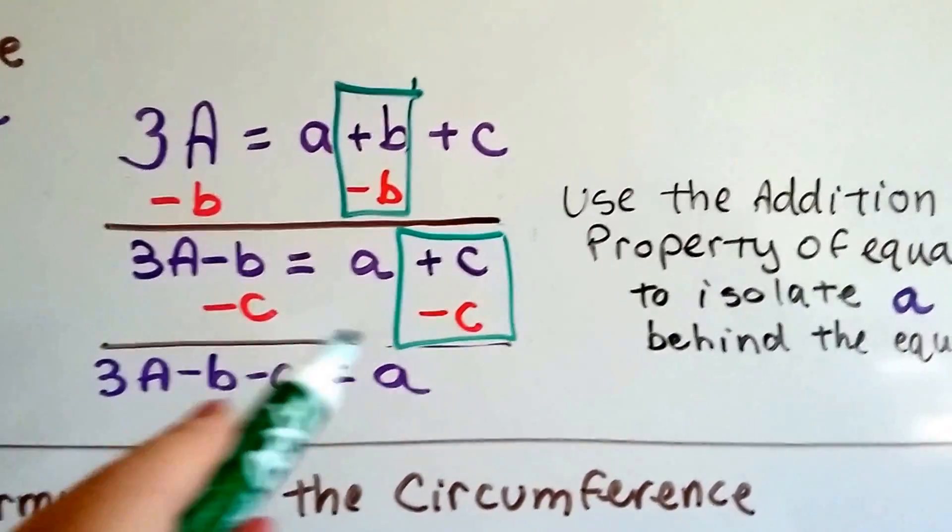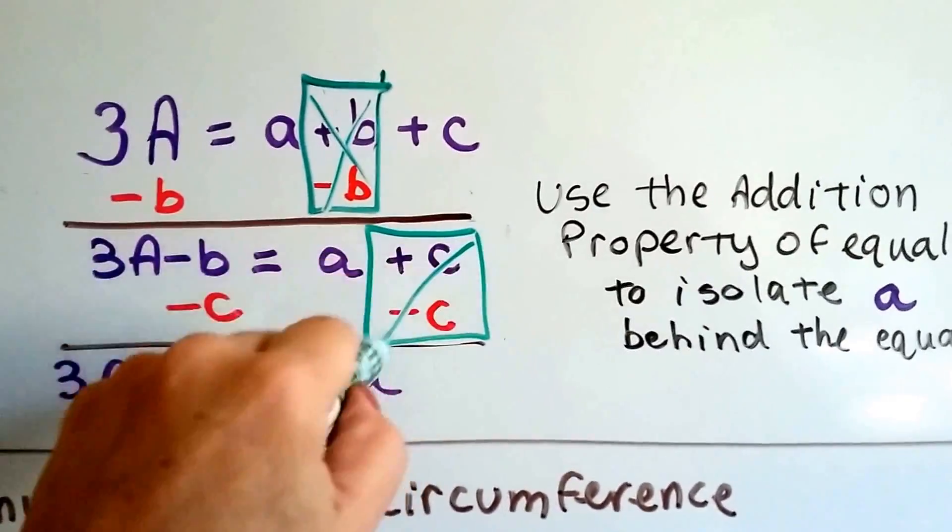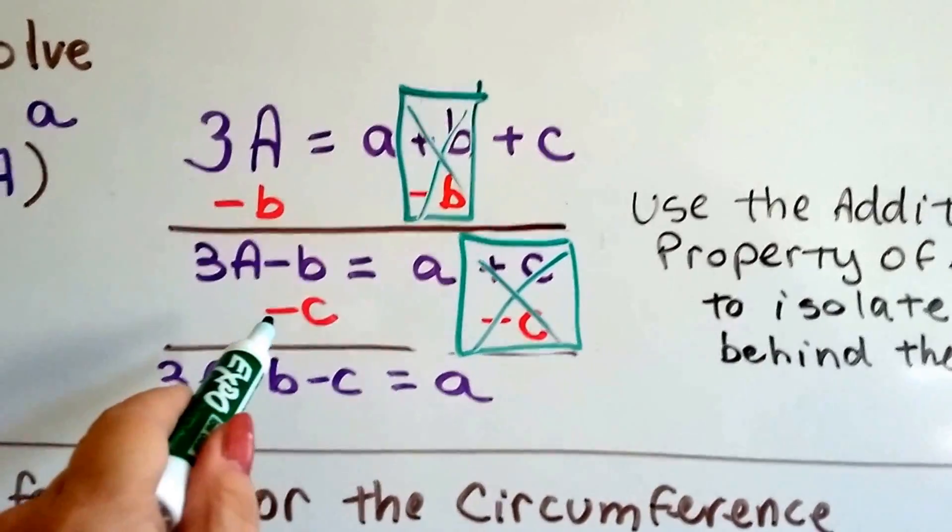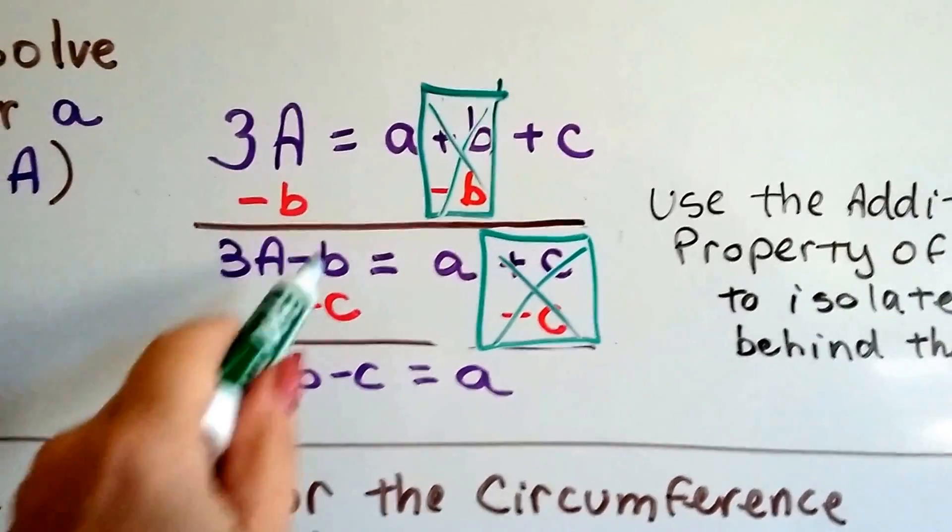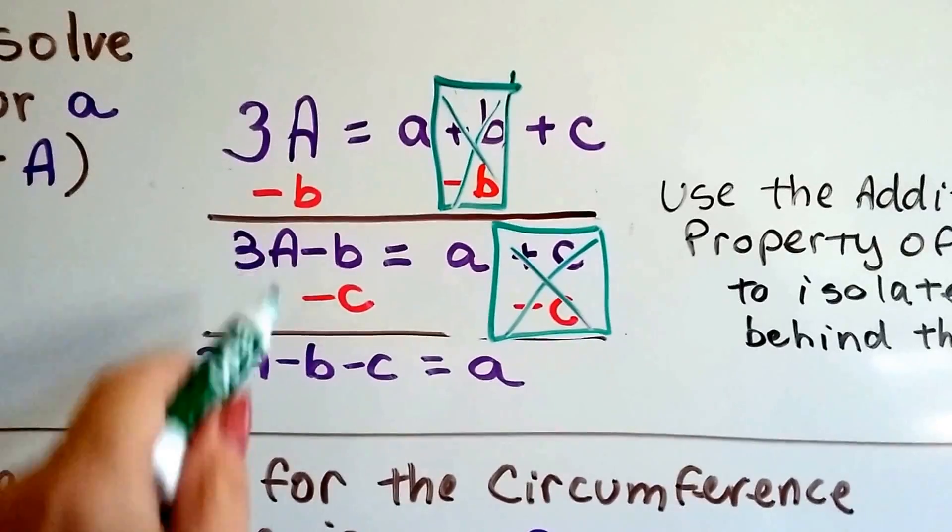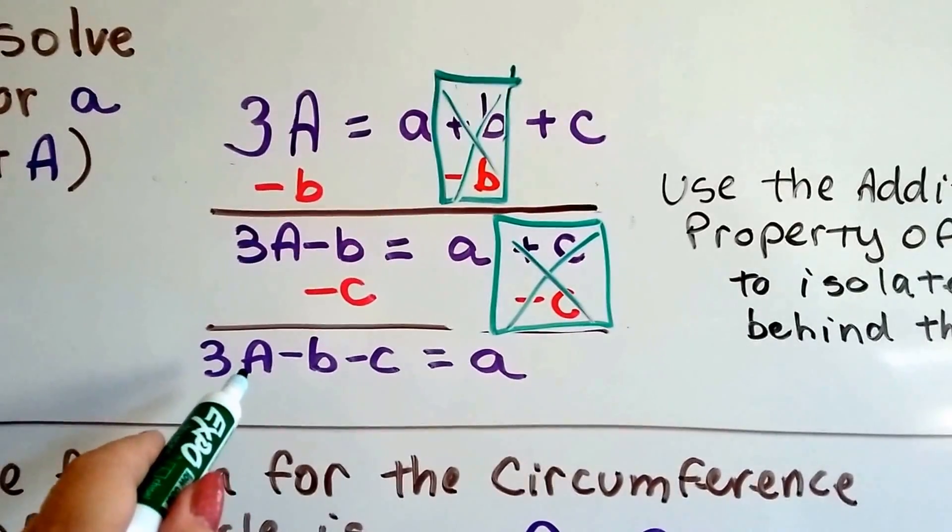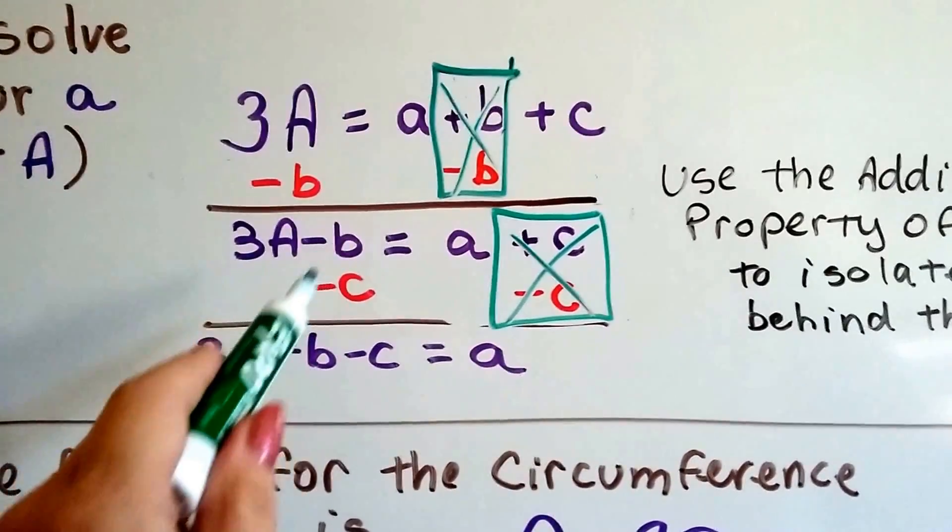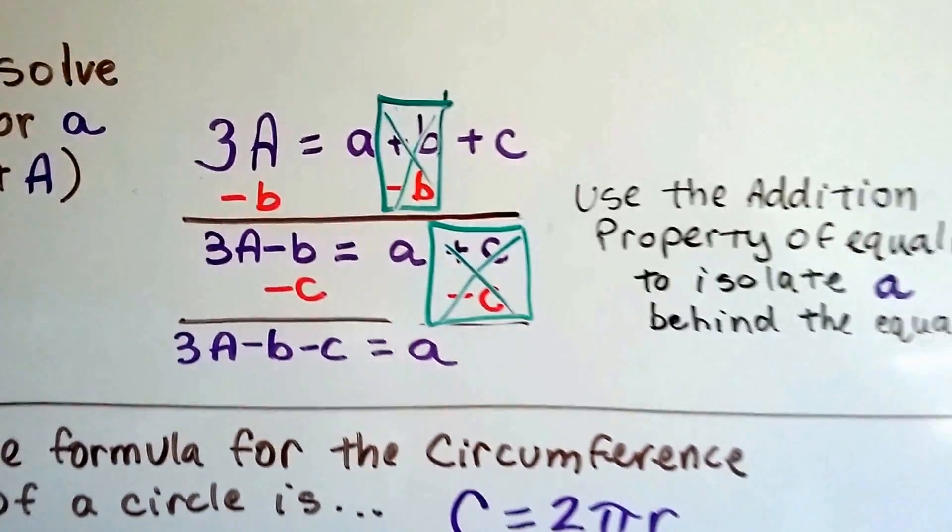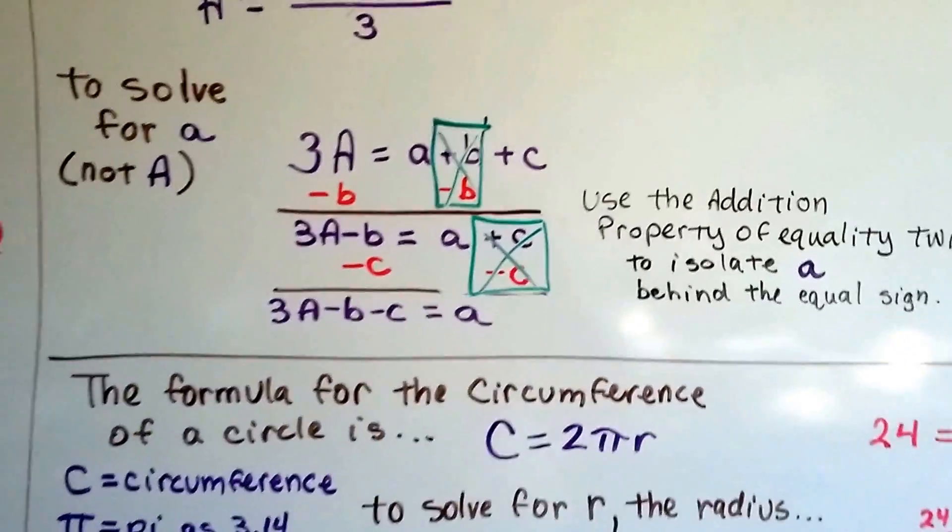We subtract the C, we make a zero pair, so it's gone, that's gone, that's gone, and now we subtract C from this side and because there isn't a C to add or subtract to, we just tack it on to the statement. So now we've got 3A minus B minus C on this side and the A by itself on that side. Isn't that cool how that happens?